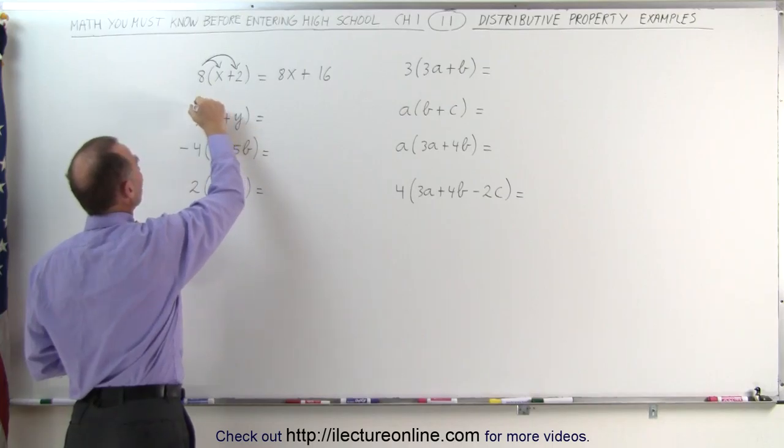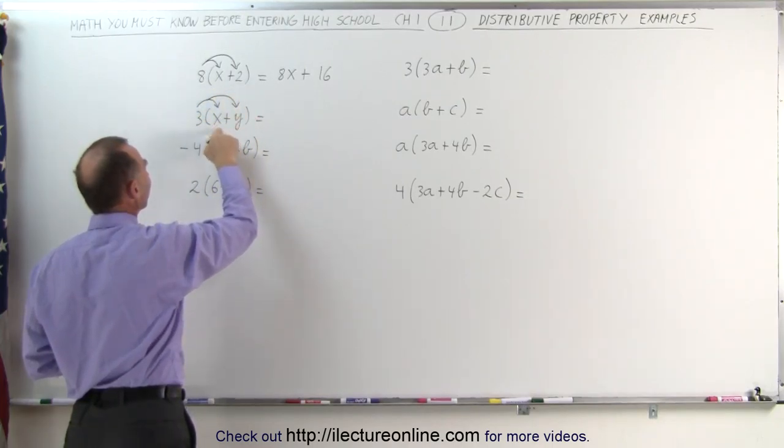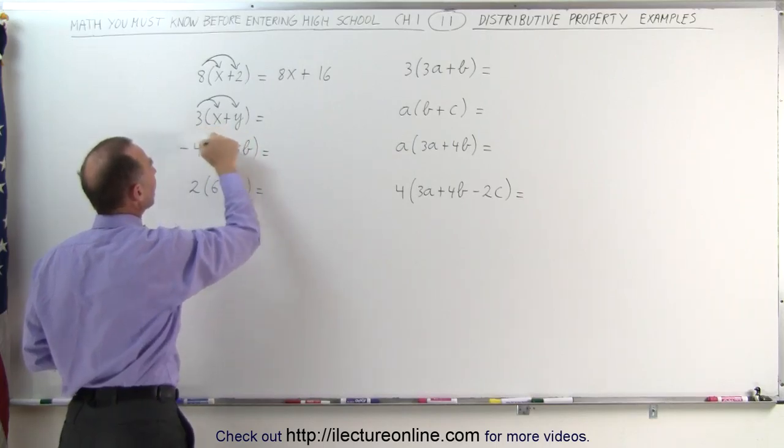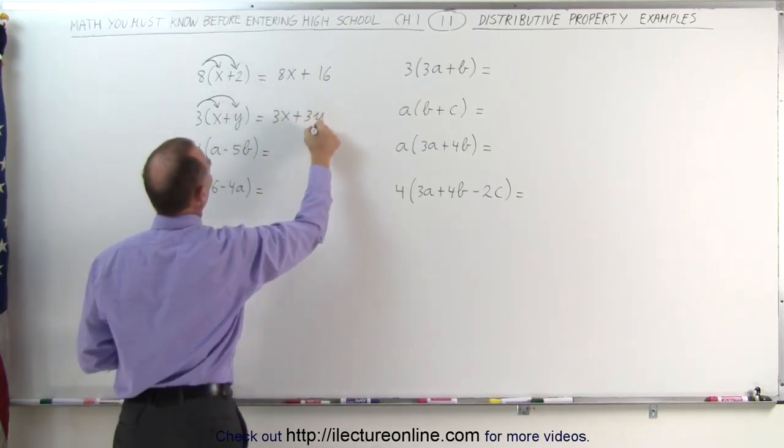Here we do the same thing. We're distributing the three across the x and the y. We're going to multiply the x times three and the y times three. This then becomes three x plus three y.